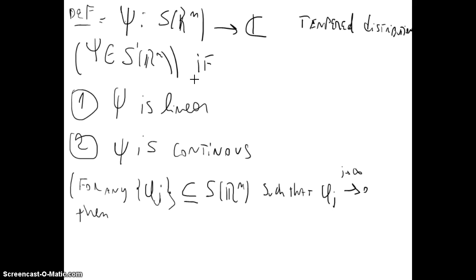ψ(φ_j) goes to 0 as j goes to infinity. Okay.